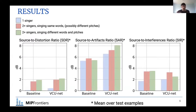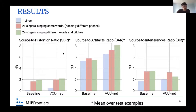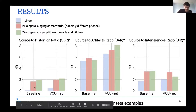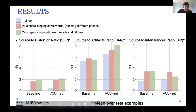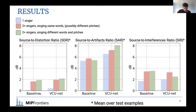We compared our baseline — the non-informed model — with the voice-conditioned U-Net, the informed model, across the three most used metrics for source separation, for the three cases where singers are present. Overall, the bars for the informed model are almost always higher than for the baseline, meaning in general this additional information helped the network for source separation.